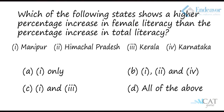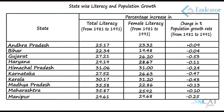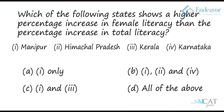Question 1: Which of the following states shows a higher percentage increase in female literacy than the percentage increase in total literacy? Female literacy has to be higher than the increase in total literacy. Starting from the top — Andhra Pradesh, Bihar, Gujarat, Haryana, and Himachal Pradesh all have lower female literacy growth. Going down, Kerala and Manipur both have higher growth in female literacy compared to overall literacy. So option 1 and 3 — the third option is correct.